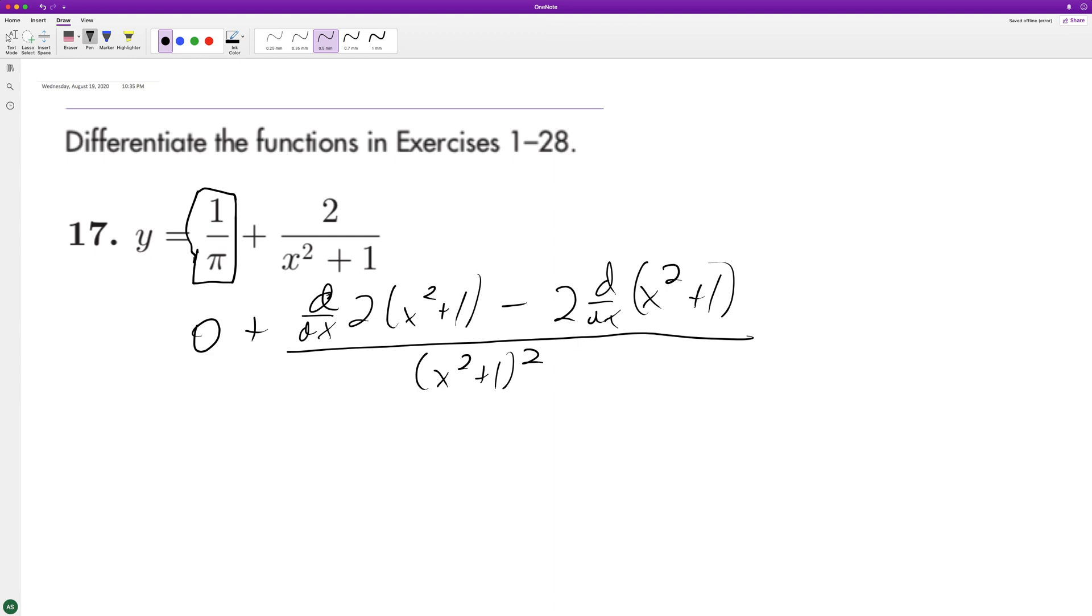the top. It's just zero, so this becomes zero times x squared plus 1, cancels out, minus 2 times 2x. And the derivative of 1 is just zero, so we get 4x. So negative 4x over x squared plus 1 squared.